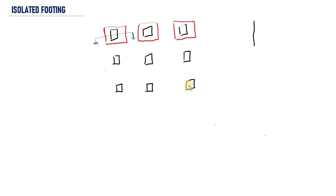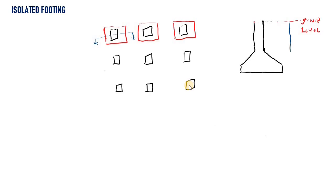Now if we cut a section like this, this is what we are going to see. We're going to have the column extending down, and this is going to be the footing. This is the ground level, and from the ground level to the subbase — that is where the foundation is resting — normally we have 1.5 meters.